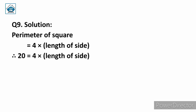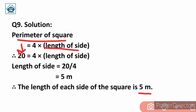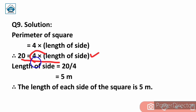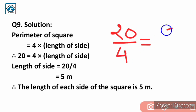Dividing 20 by 4 gives 5. Since the unit is in meter, the answer is also in meter. Therefore, the length of each side of the square is 5 meter. To revise: perimeter equals 4 into side, so side equals 20 divided by 4, which equals 5 meter.